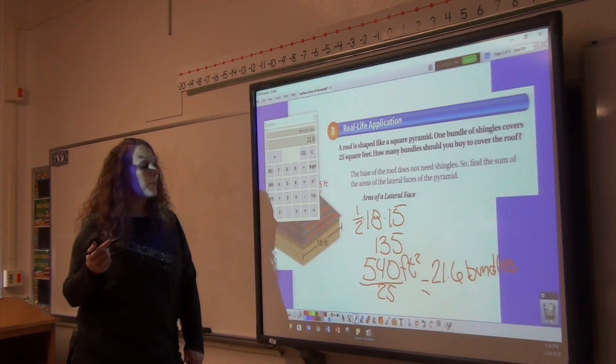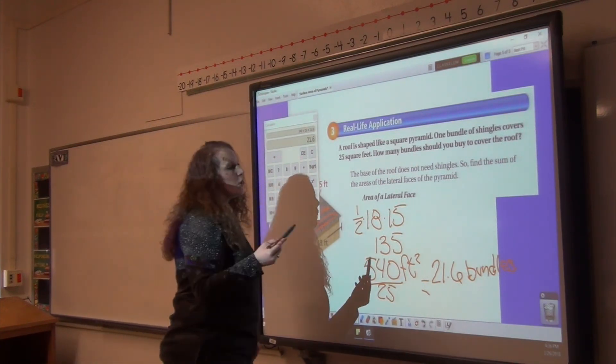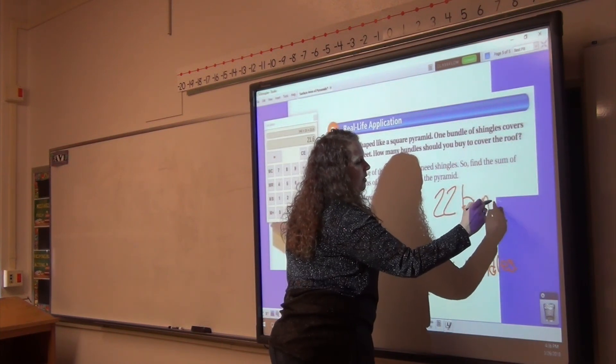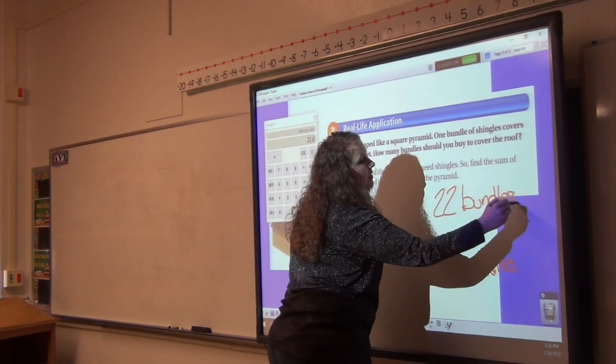However, Home Depot probably will not sell me 0.6 of a bundle, so my answer is going to be 22 bundles of shingles.